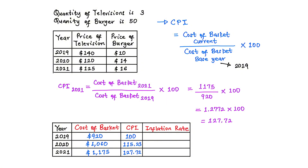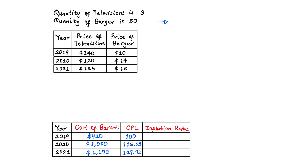An important note: the CPI of your base year must always equal 100. If the cost of basket of a particular year is greater than the cost of basket of the base year, the CPI will be greater than 100. If the cost of basket is less than that of the base year, the CPI will be less than 100.